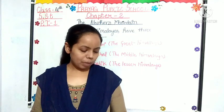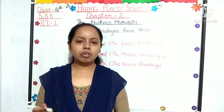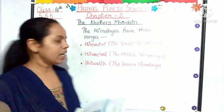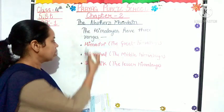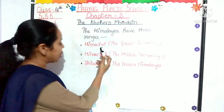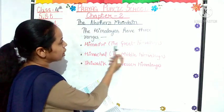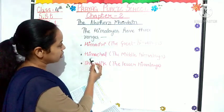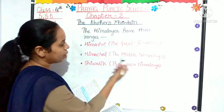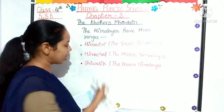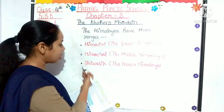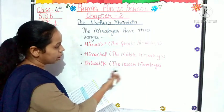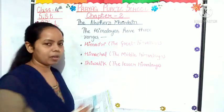Today we are going to know about the three ranges of our Himalaya. Our Himalaya has three ranges. The first one is Himadri, which we call the Great Himalaya. The second one is Himachal, which we call the Middle Himalaya. And the last one is Shivalik, which is known as the Lesser Himalaya.